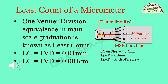Least count of a micrometer: 1 Vernier division equivalence in main scale graduation is known as the least count. Least count LC is equal to 1 Vernier division measurement, equal to 0.01 mm. Or least count LC is equal to 1 Vernier division measurement, equal to 0.001 cm.